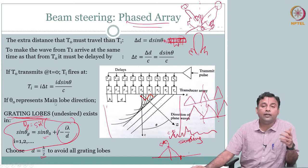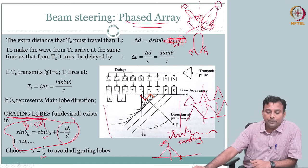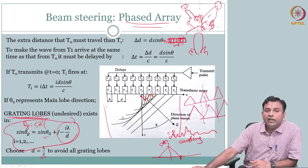Phased arrays are defined by d = lambda / 2. At higher frequencies you get better resolution but smaller lambda, so you need tighter element spacing. This makes the corresponding electronics increasingly sophisticated — each element needs its own channel. Phased arrays are very popular for applications where you need no grating lobes.